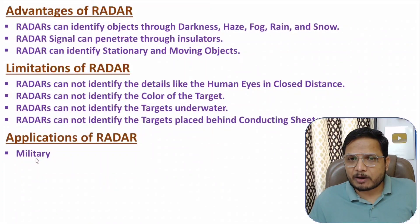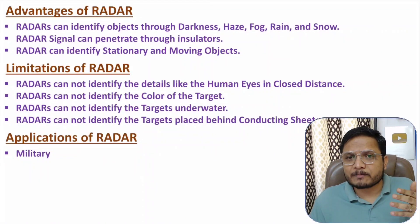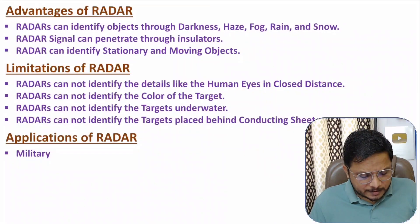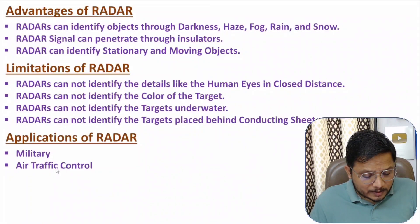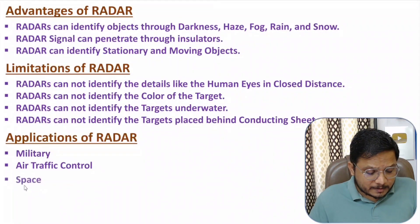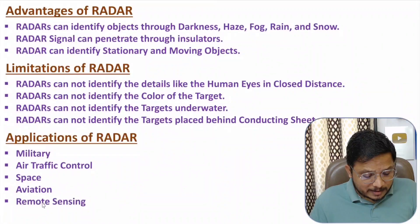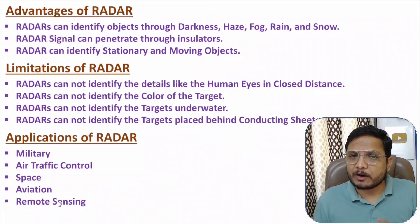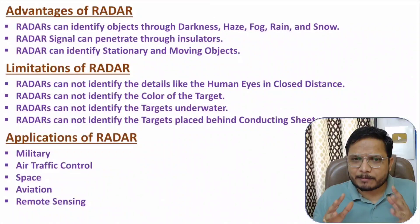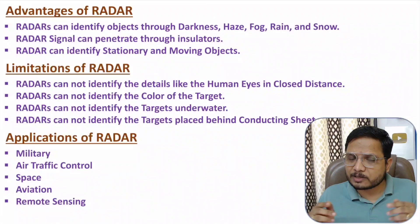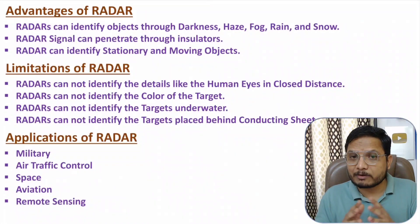Now let us talk about applications of radar. There are many military applications — we can identify enemy tanks, vehicles, and military targets. In air traffic control, we also use radar system. In space, radar is used to identify objects. In aviation, radar is used, and in remote sensing radar is used to identify weather data. I hope you have enjoyed this session. If you have anything to share, please note it in the comment section. Thank you so much for watching.